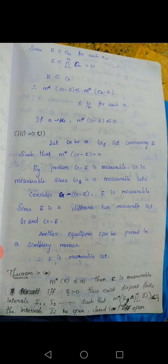Next theorem: M-star of E is less than or equal to infinity. Then E is measurable if and only if, for every epsilon greater than zero, there exist disjoint finite intervals I_1, I_2, etc., such that M-star of E delta (countable union, i equal to 1 to infinity, of I_i) is less than epsilon. The intervals I_i may be open, closed, or half-open.